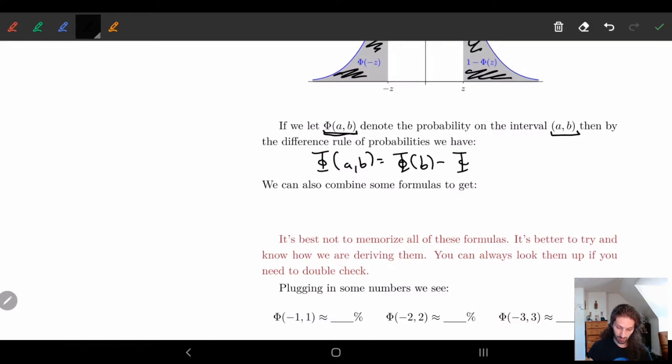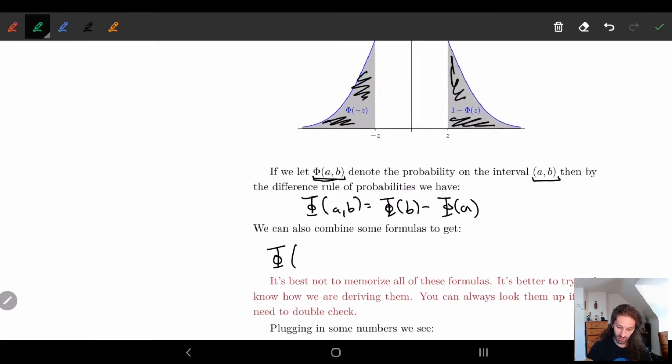So we saw this, this is what we're kind of deriving. So if I were to plug in z and -z, so I want to look at what's in the region here in green, in between the two. Well, this is, so -z and z, this is Φ(z) minus Φ(-z).